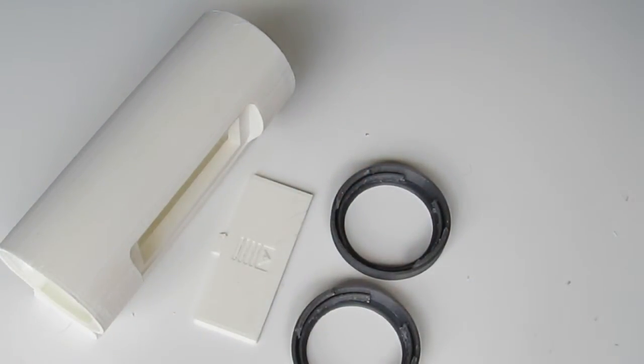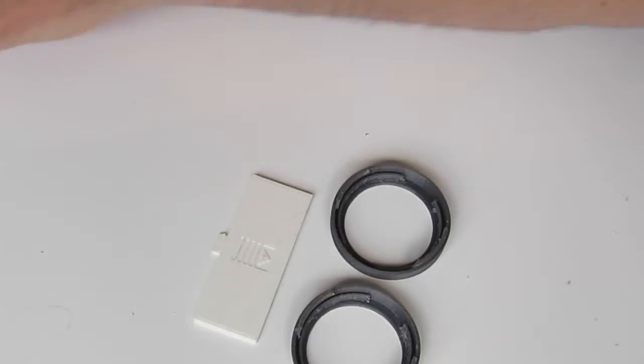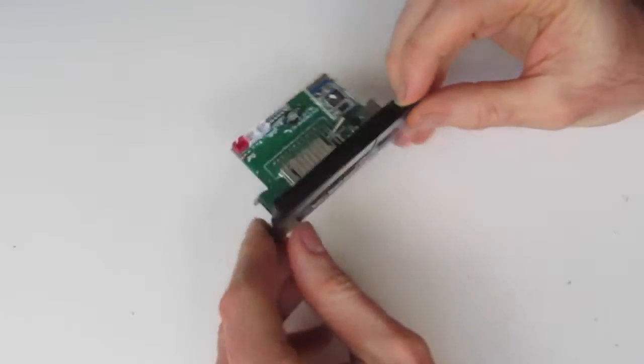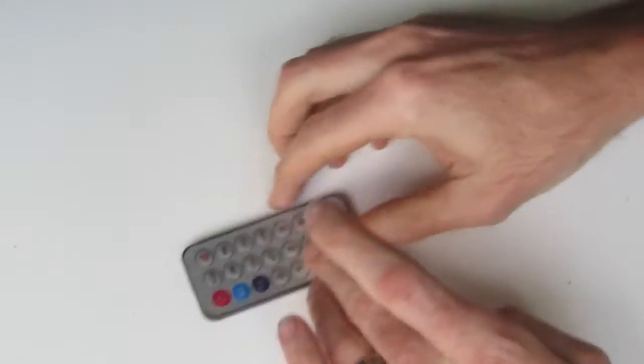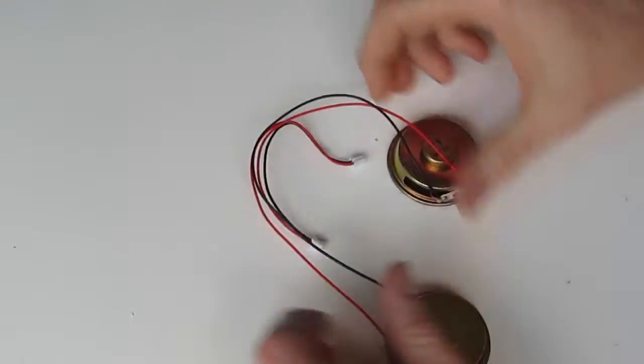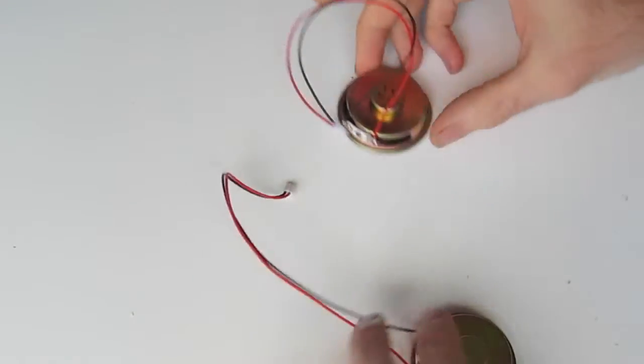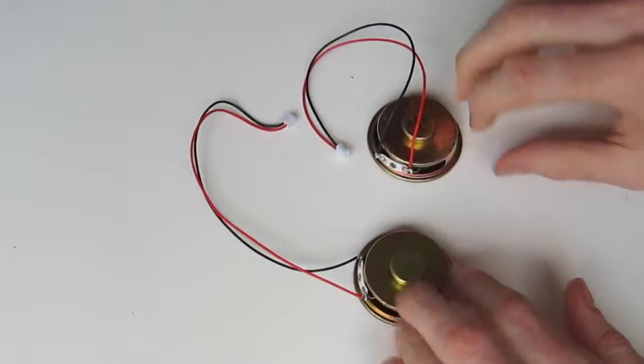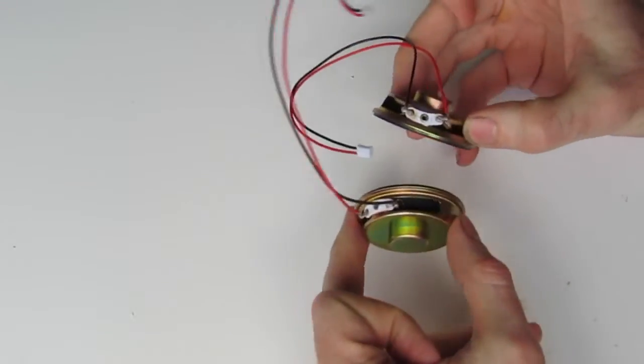So secondly, let's just take a quick look at the electronics components. We've got our receiver module here, Bluetooth control module. Comes with a little remote, infrared remote. We've got our two speakers. I've already attached the cable connectors which you also get in your kit. So these have already been connected to the speakers as you can see.